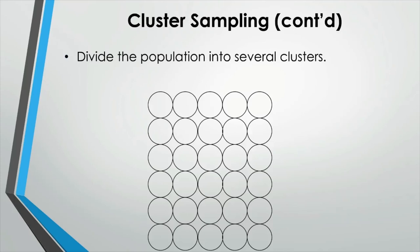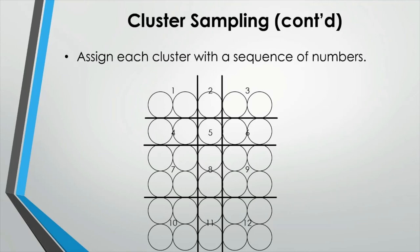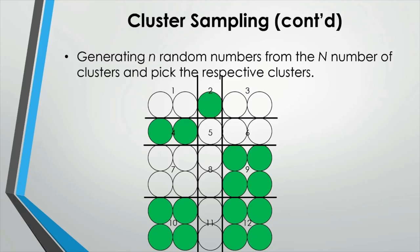In cluster sampling, you first divide the population into several geographical clusters and assign each cluster a sequence number. You then generate n random numbers from the N number of clusters available — in this example, N is 12 and n is 5, so you pick 5 random clusters out of 12. Once the clusters are sampled, you do not do further sampling — you take the whole population from each selected cluster. That is how cluster sampling is done.